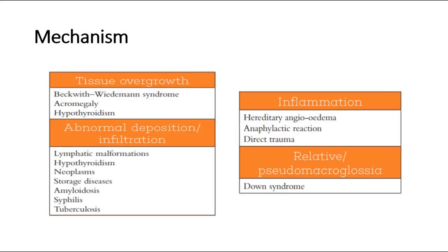Tissue overgrowth is seen in Beckwith-Wiedemann syndrome, acromegaly, and hypothyroidism. Abnormal deposition or infiltration is seen in lymphatic malformations, hypothyroidism, neoplasms, storage diseases, amyloidosis, syphilis, and tuberculosis.